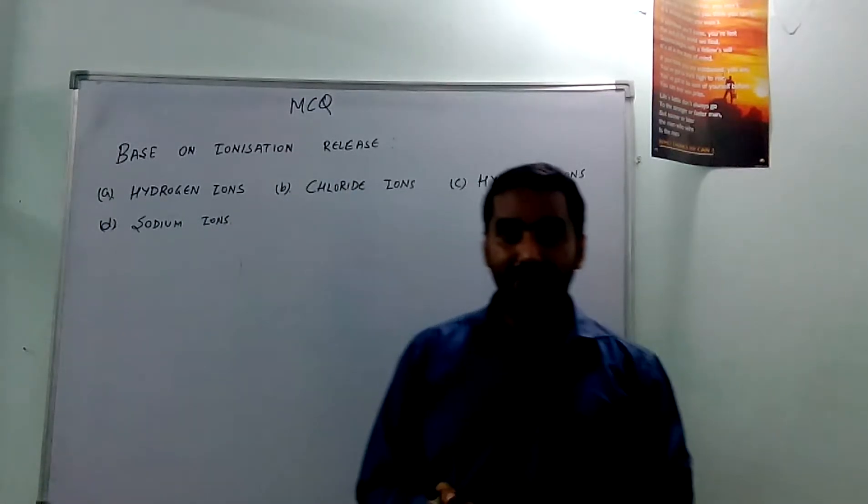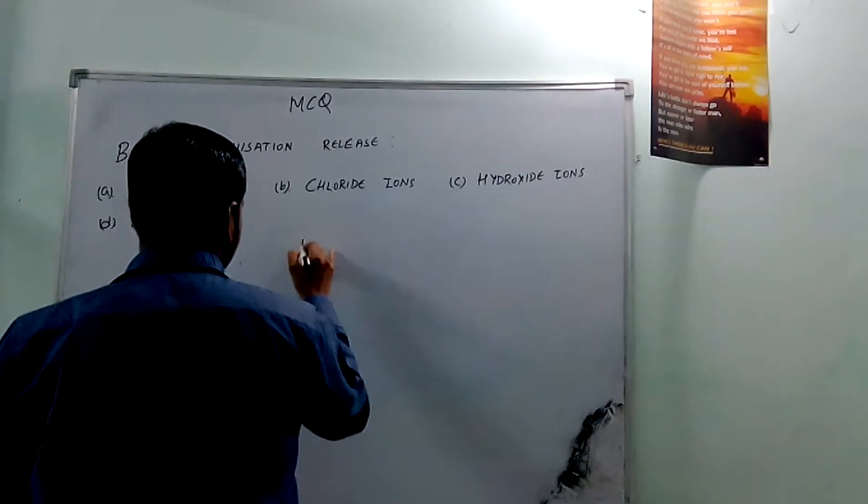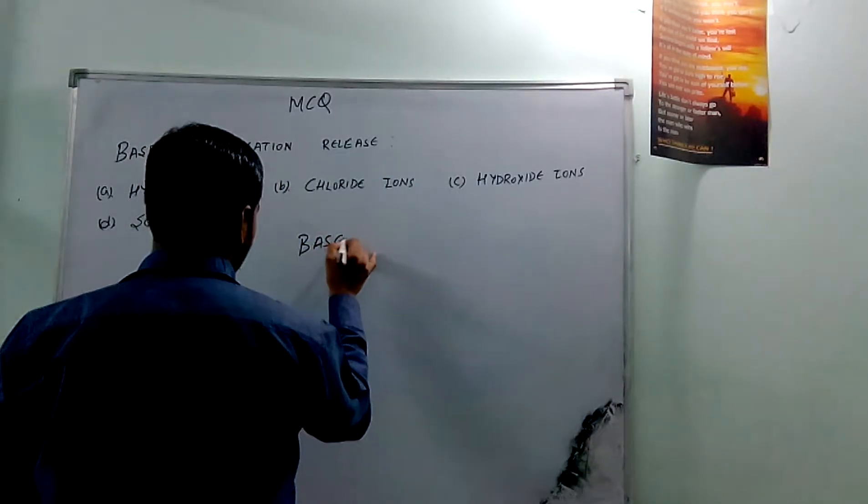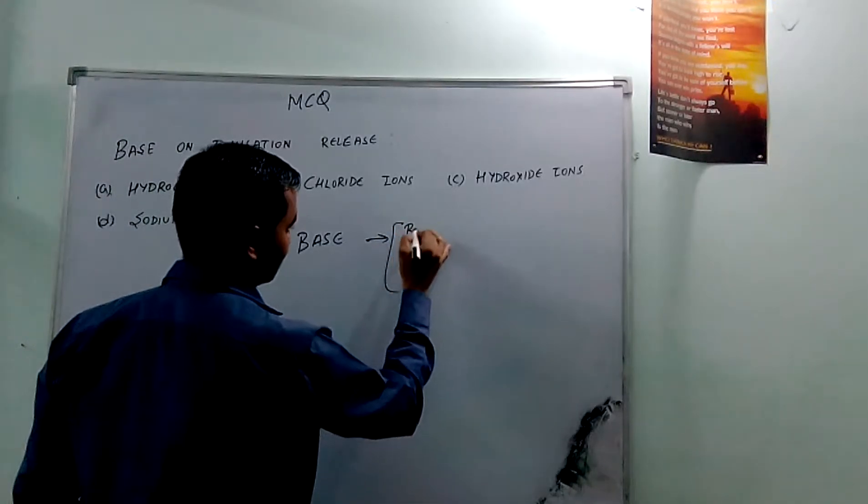Before learning about ionization and basic ionization, you first need to know what is the base. By characteristics of base, you can understand what type of ion it releases. The first thing is it is bitter in taste.